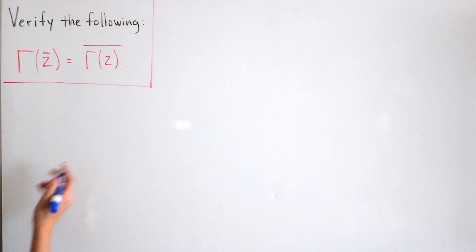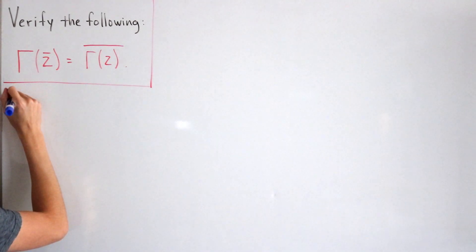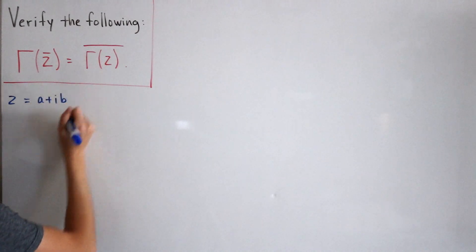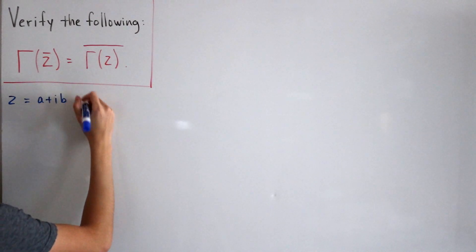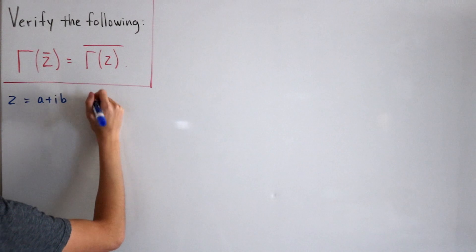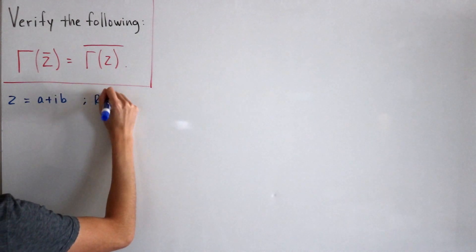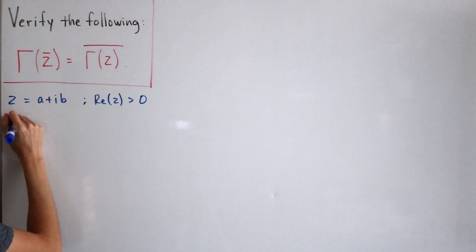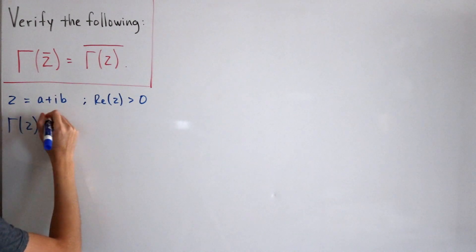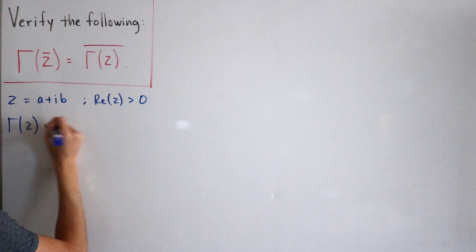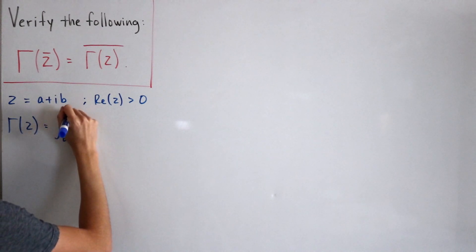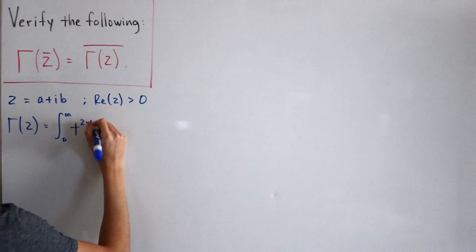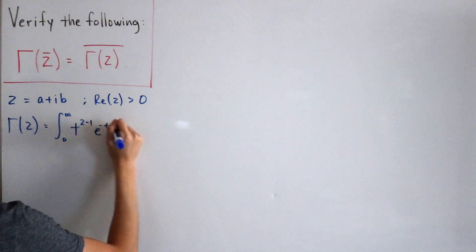Suppose we set some complex number z equal to a plus i times b, such that a and b are real numbers, and also that the real part of z is strictly greater than zero. Then gamma of z in integral representation is written as the improper integral from zero to infinity of t to the power z minus 1 times e to the negative t, dt.